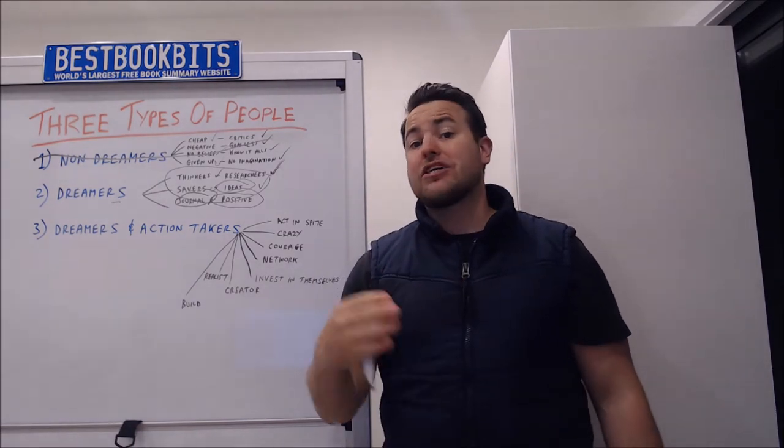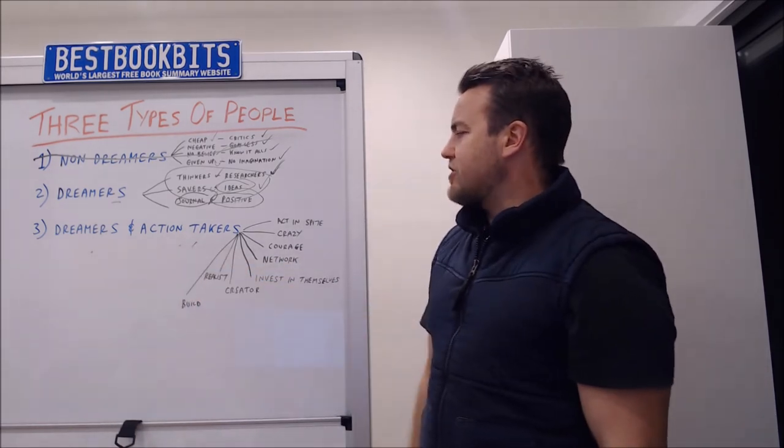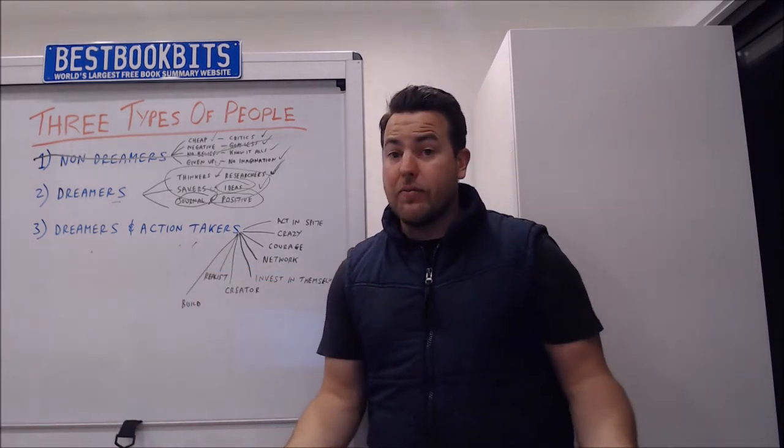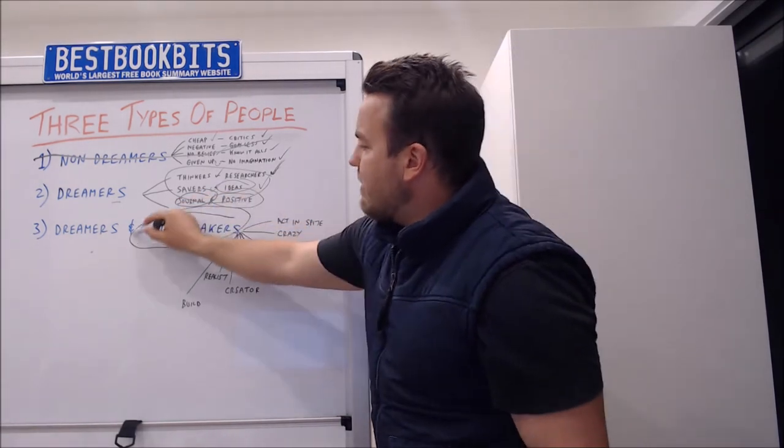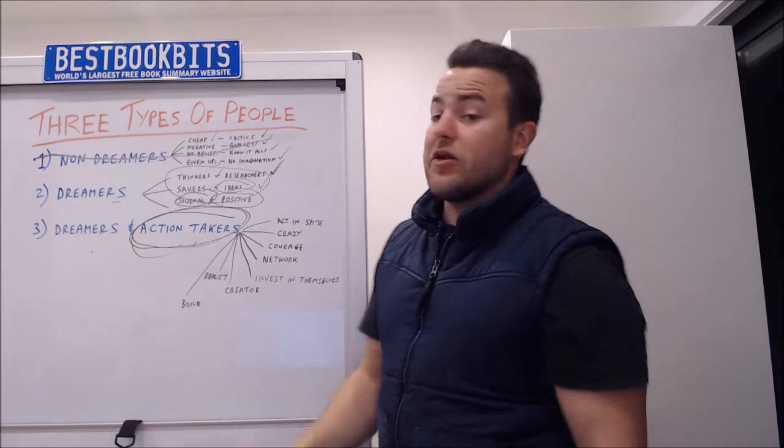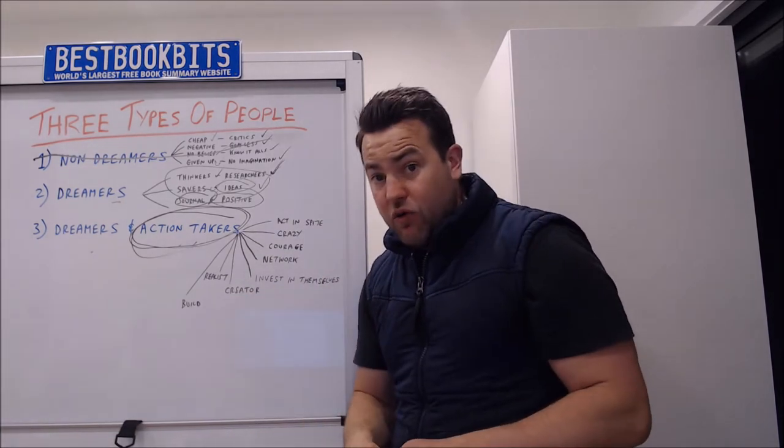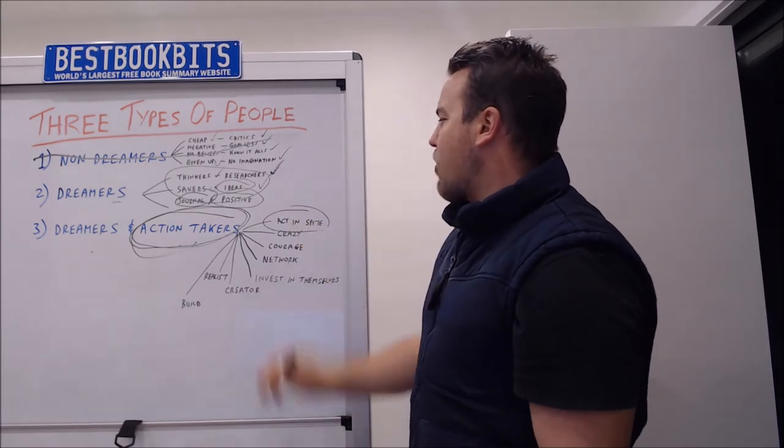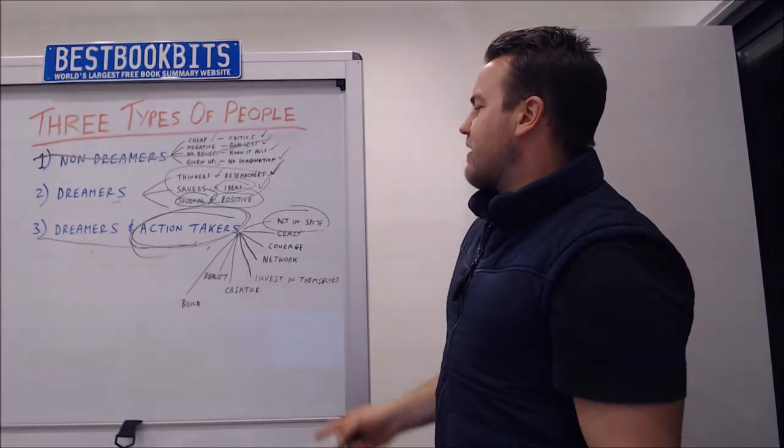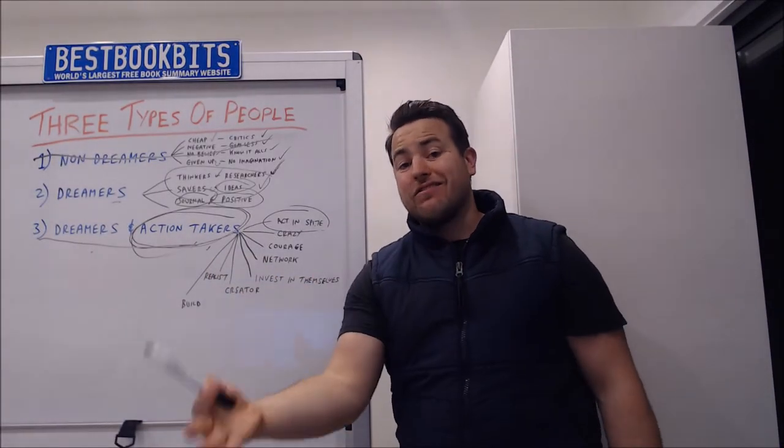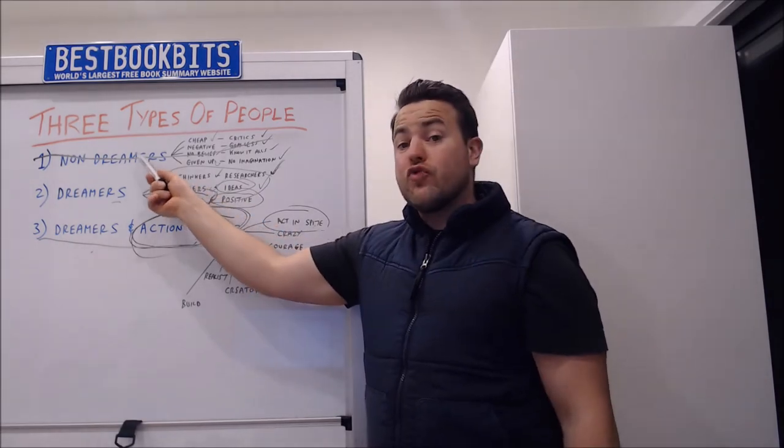Now the third type of people are the people that actually move the needle forward. These are the people that are dreamers and action takers. What do I mean by that? Action takers. These are the 10% of the people that is going to move humanity forward for the 90% or have done already in the past. These people act in spite. So if you're the number three and if you resonate with dreamers and action takers you're the kind of person who acts in spite. Acts in spite of criticism. Acts in spite of the non-dreamers.